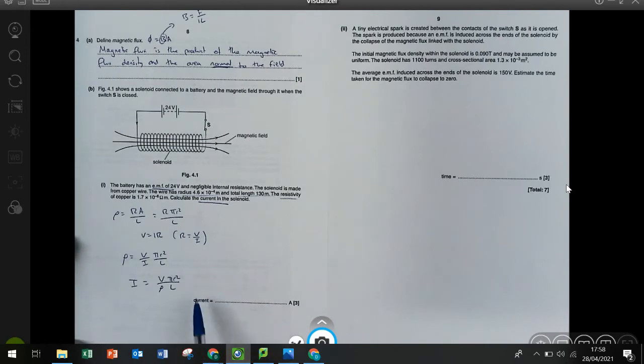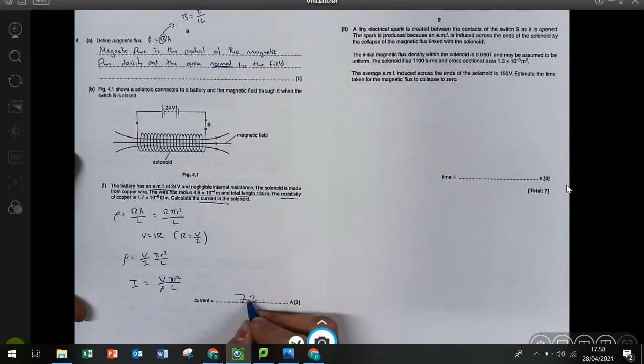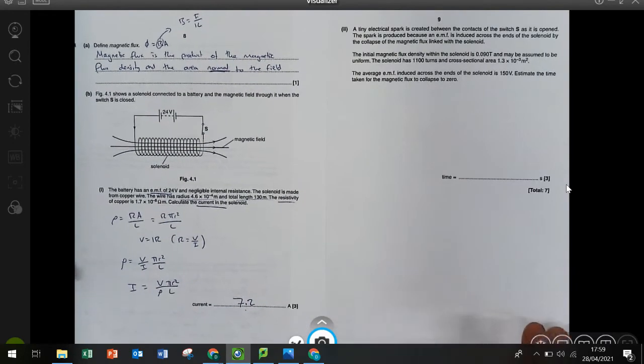Now it's a case of plugging in all the numbers from the question. And when you do that, you get 7.2 amps, which does seem like quite a high current. So it's always worth checking again, but that is the answer.